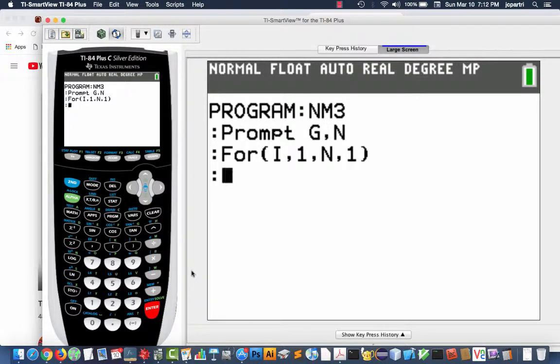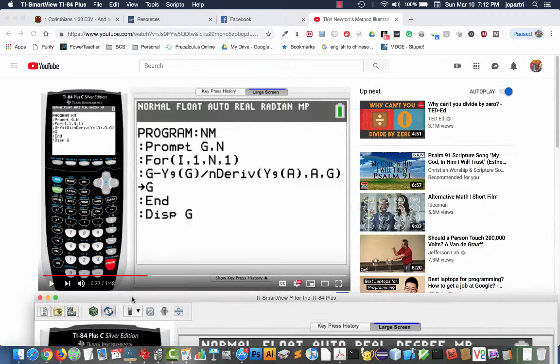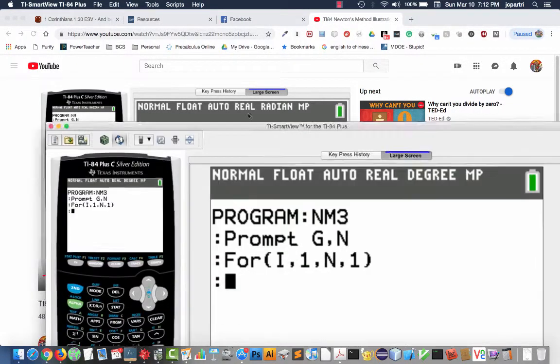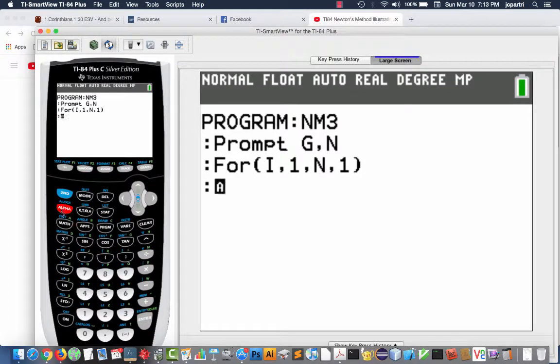Now, everything that is below the for loop is going to be in the loop until I use the end statement. And then that's going to end the for loop. Let's check out what the next statement I need is. So the next statement that I need is G is my guess. You have to plug in a guess in Newton's method because you've got to start the whole process. So, G is my guess, G minus the function at G divided by the derivative of the function at G. And so, we're going to have to go to alpha and then G minus, now the function.